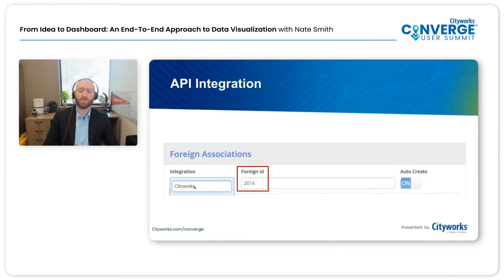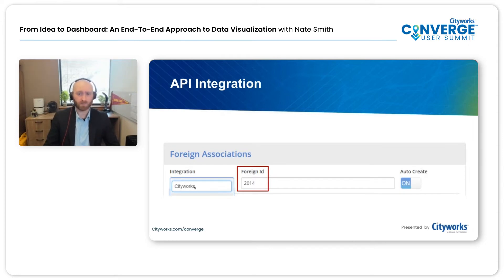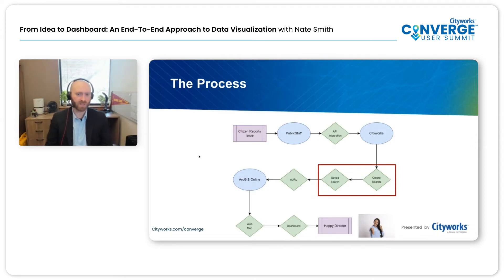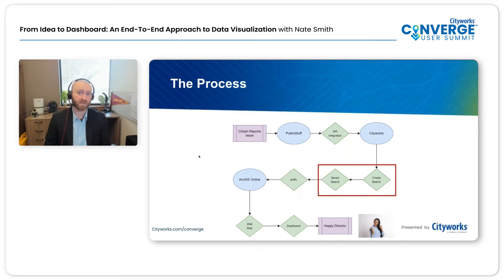From there, we have an integration with CityWorks using the service request API. Within public stuff, each request type has to have an associated CityWorks form ID. We were simply able to grab those service request IDs from the CityWorks database and put those right into public stuff, and then it integrates using the API.